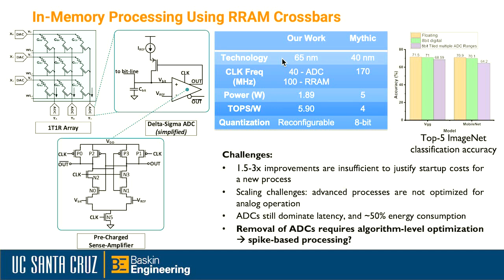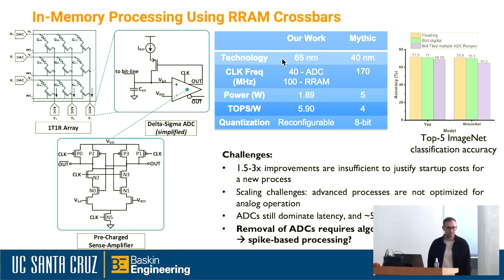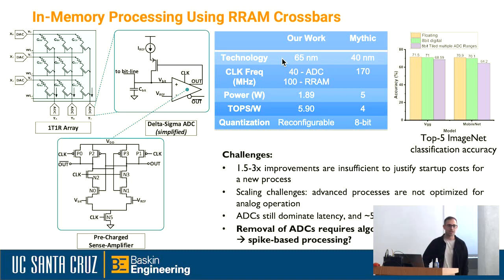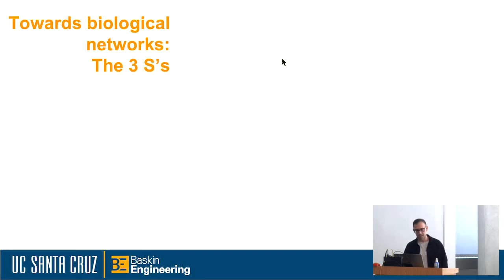The direction I took was removing ADCs rather than trying to crank out more value from data converters. Let's do something different with our neural nets: spike-based processing. When I say spikes, I mean an event that can be represented as a one or a zero. If it's a zero, there's no event. If it's a one, your neuron has spiked. In that instance you can substitute ADCs with sense amplifiers or something to that effect.